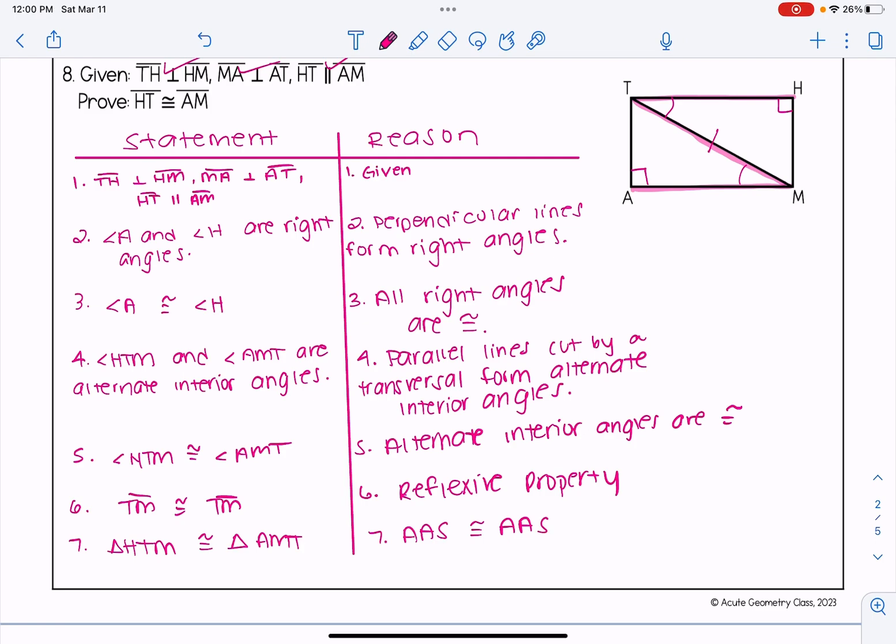Now we've been proving triangles are congruent, but notice I didn't actually prove my proof statement here. So I have to add on that HT is congruent to AM. And the reason behind that is CPCTC. It's because HT and AM are corresponding parts of congruent triangles. Therefore, they must be congruent. So hopefully this video helped you understand when to use CPCTC.